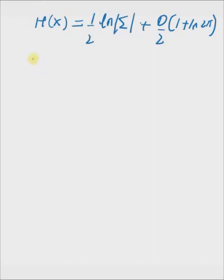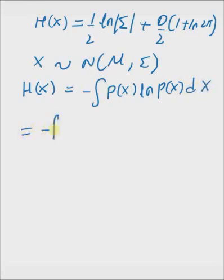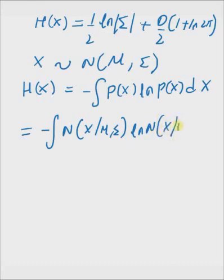The length of the vector x is d. Given that x is a multivariate normal distribution with mean vector mu and covariance matrix sigma, the goal is to derive the entropy of this distribution, which is given by the negative integral of p of x times log p of x dx — that is, the integral of N(x | mu, sigma) multiplied by the logarithm of N(x | mu, sigma) dx.